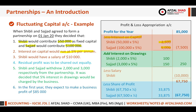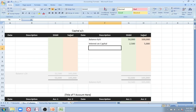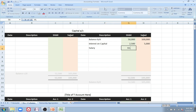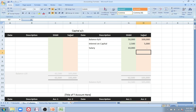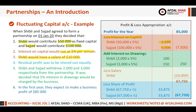Point three: Shibli would have a salary of 10,000. This salary is added to Shibli's capital — 10,000 on the credit side — increasing his capital. There is no salary entry for Sajad because the salary is only allocated to Shibli.